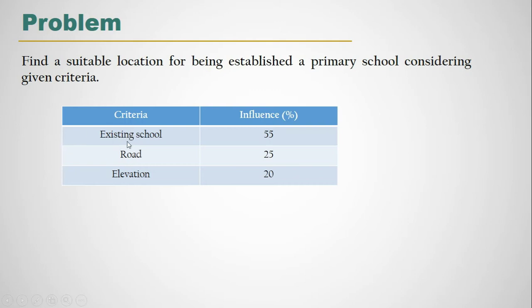The criteria are existing school, road, and elevation. These are not all the criteria we should consider for establishing a primary school — there are many factors — but at the primary level I will show you the basics of suitability analysis by following only these three criteria. In the next session we will learn more broadly about suitability analysis through model builder, but in this session I will briefly show you the concept.